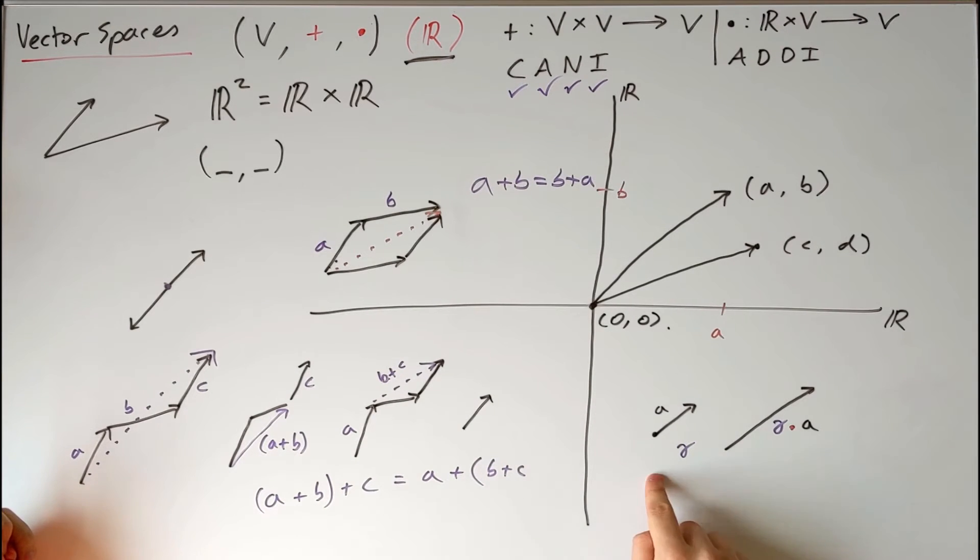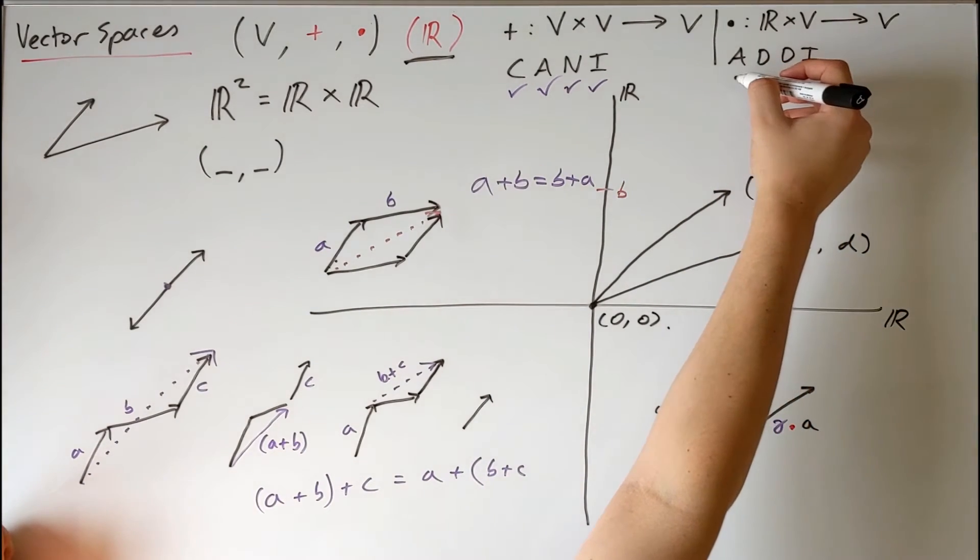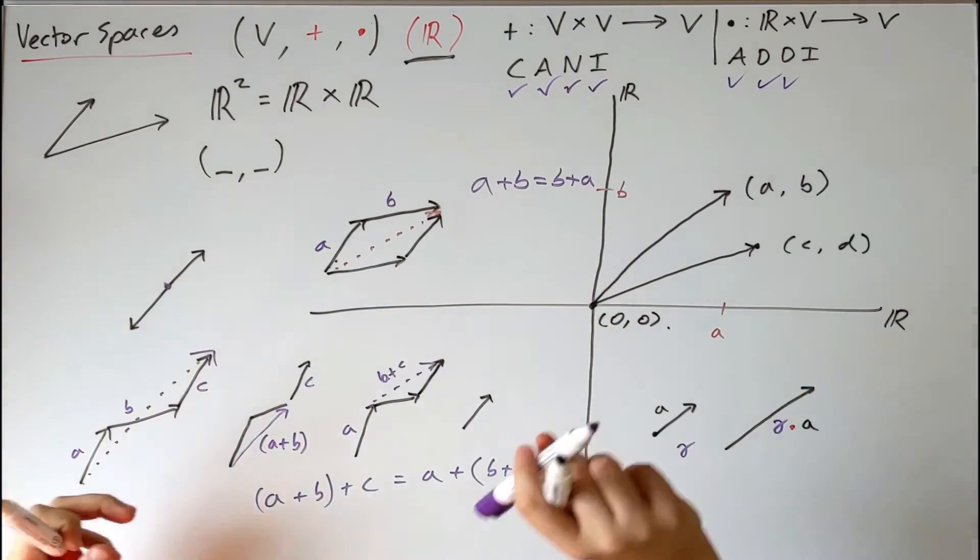So I won't go all the way through proving all of these axioms, they're fairly easy to see. Essentially, associativity and distributivity are all trivial, and the identity element is simply you take the vector and you take the scalar 1, which simply gives you back the original vector.